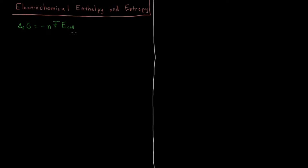So that's all good and fantastic — we can determine if the reaction is spontaneous, we can determine what direction it goes in, all those things from the Gibbs energy. But what if we want to calculate what the entropy is or what the enthalpy is? We only have the Gibbs energy here from the Nernst equation. So there are a few quick derivations we can do to figure out what the enthalpy and what the entropy are.